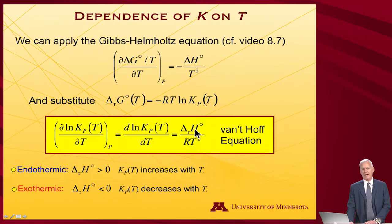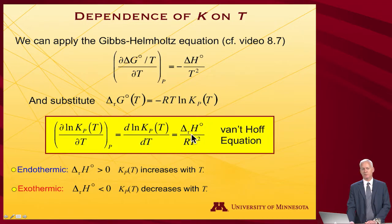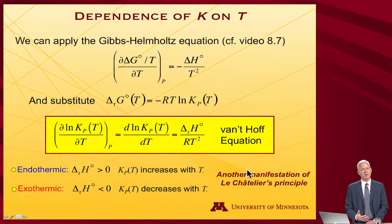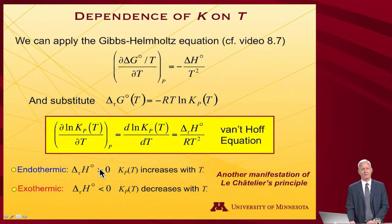What the Van't Hoff equation says is that for an endothermic reaction — meaning delta H of reaction is a positive number — I would expect Kp to increase with T. Meanwhile, for an exothermic reaction, if the enthalpy of reaction is a negative number, then the equilibrium constant would be expected to decrease with T. This is another manifestation of Le Chatelier's principle: a reaction responds to a change in temperature by going in the direction of the higher energy products. For an endothermic reaction, you're providing heat, and as a result, you're driving things towards those higher enthalpy products. If you decrease the temperature and pull heat out, the opposite will be true.